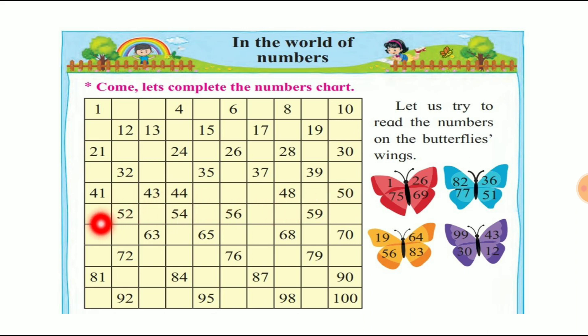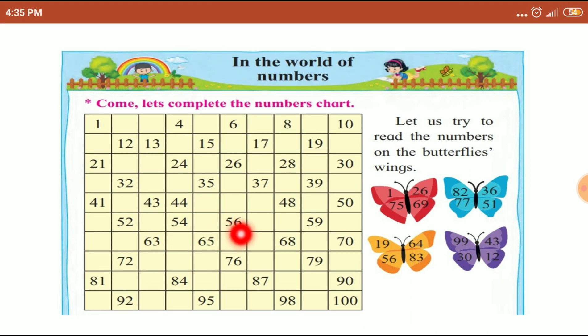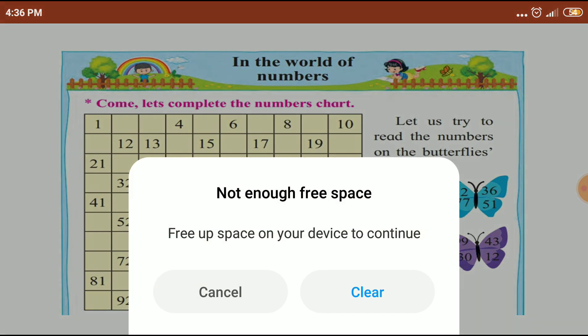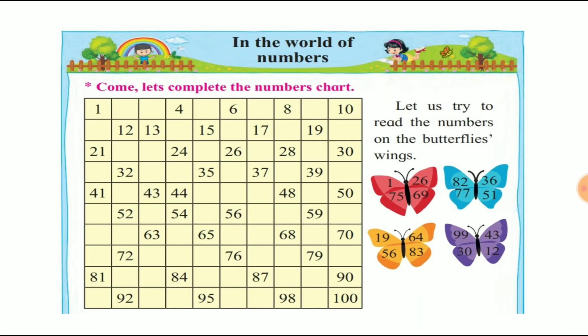Next: 51, 52, 53, 54, 55, 56, 57, 58, 59, 60. Okay, here we have 51 to 60. The serial order is complete.